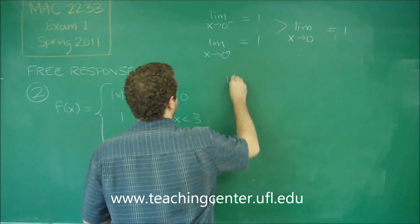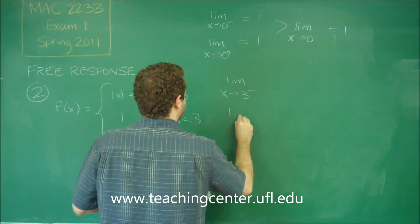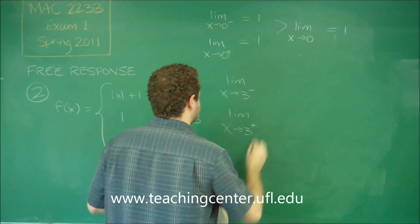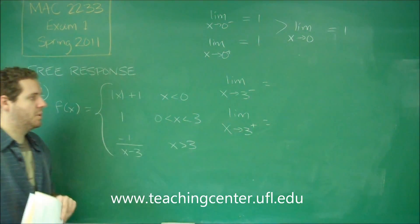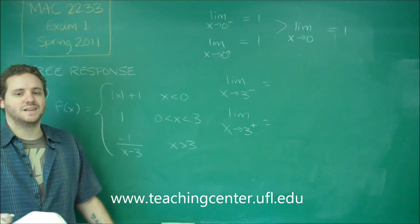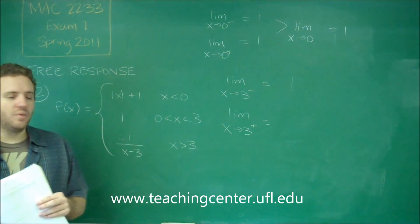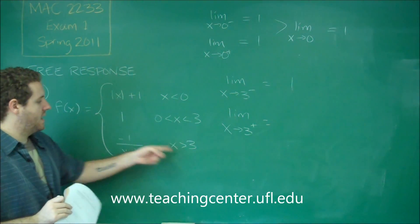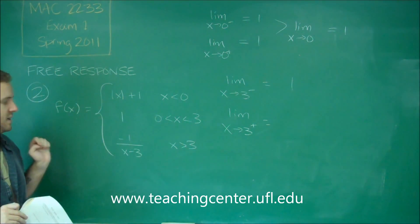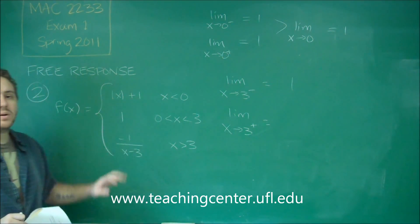Let's do the same test with three. The limit as x approaches three from the left uses the middle function because that's the one with x's less than three — we get one. For three from the right, we use the bottom function because that's where x's are bigger than three. If we try to plug in three directly, we get zero on the denominator.